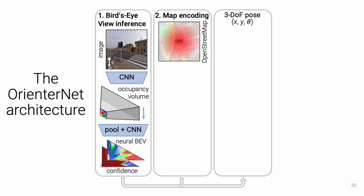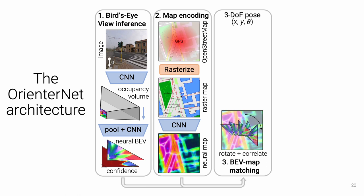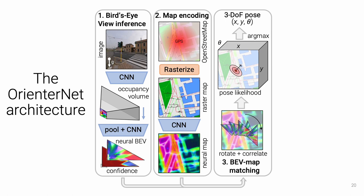In parallel, the vector map is rasterized into multiple channels and encoded into a neural map. We finally exhaustively match the BEV against the map. We discretize the pose space into positions and angles arranged in a grid, and for each pose, we compute the correlation between the BEV and the map weighted by the confidence. This results in a probability volume of poses from which we can extract a single estimate.